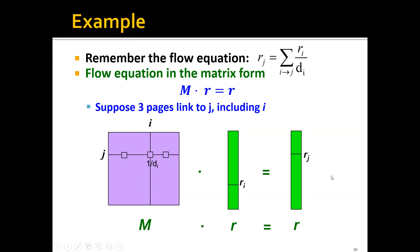In order to compute the importance score of page j, which is rj, we need to compute the inner product between row j of M and r. The inner product of these two vectors has three terms, and one of the terms is exactly the product of 1/di and ri. So it's adding up the votes coming from the incoming links to calculate the final importance score for page j.